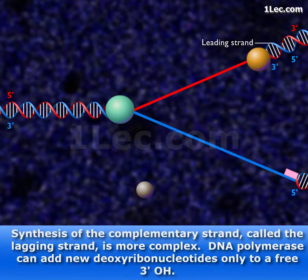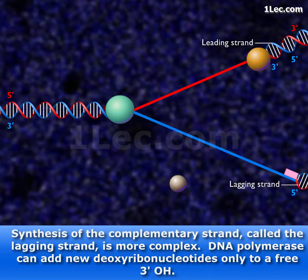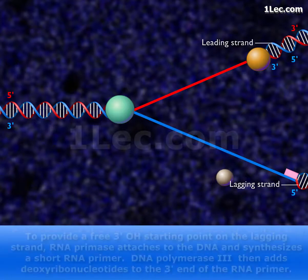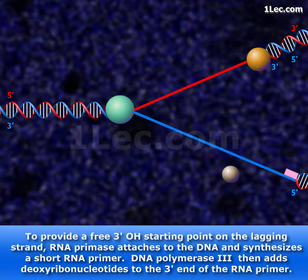Synthesis of the complementary strand, called the lagging strand, is more complex. DNA polymerase can add new deoxyribonucleotides only to a free 3' OH. To provide a free 3' OH starting point on the lagging strand,